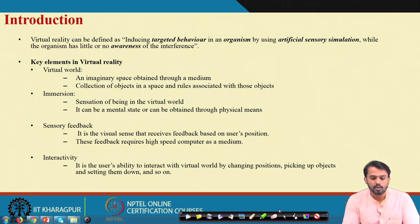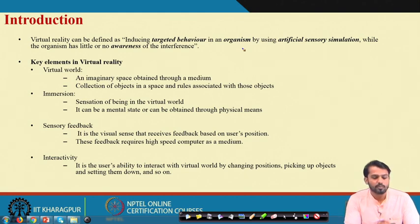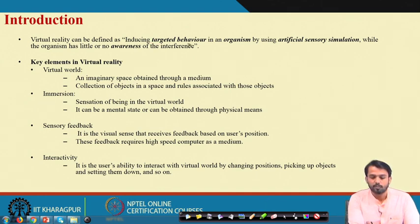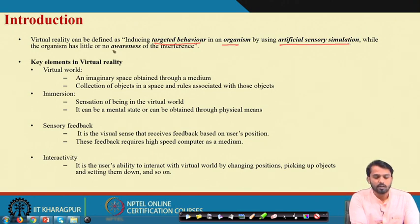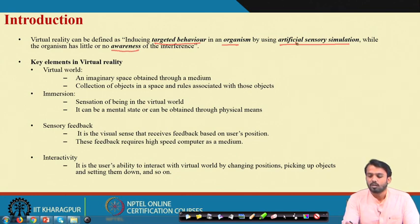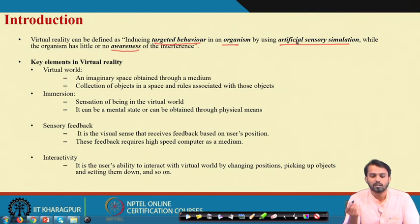Virtual reality can be defined as inducing targeted behavior in an organism by using artificial sensory stimulation, while the organism has little or no awareness of the interference. The three important terms here are: creating targeted behavior in an organism, using artificial sensory stimulation, and ensuring the user has no awareness of the interference being created — that is, artificially created sensory stimulation to achieve a certain targeted behavioral objective.